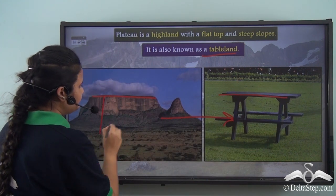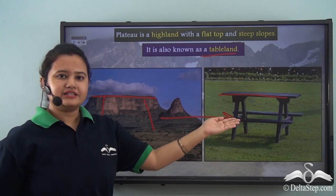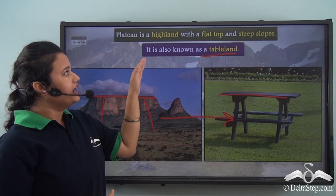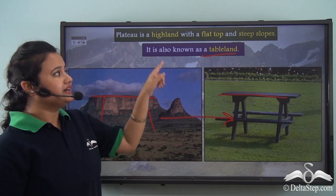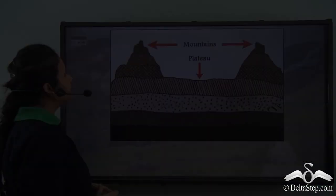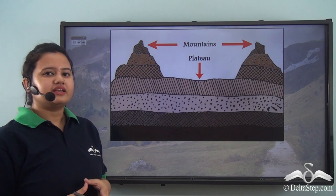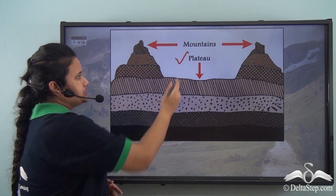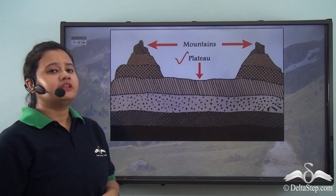A plateau is also known as a tableland. In this picture, we can see that a plateau has been placed in between two mountains. Can you point out the difference between these two types of landforms?